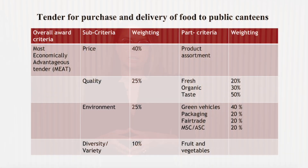Let's have a look at the example of award criteria and their weighting in a tender for the purchase and delivery of food to public canteens. We can see that the overall criterion used is MEAT. The sub-criteria are divided into four aspects: price, quality, environment, and diversity. We can also see the weighting of each sub-criterion.